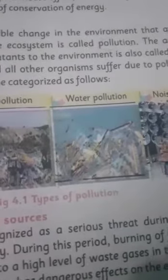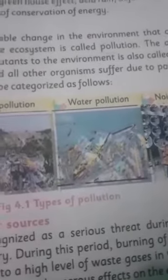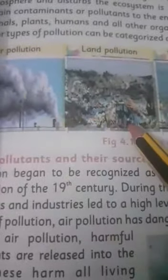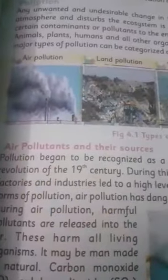Animals, plants, human beings, and each and every living organism including microorganisms — they all suffer due to pollution. The major types of pollution can be categorized as follows: air pollution, land pollution, water pollution, and noise pollution. Now the first one is air pollution — air pollutants and their sources.